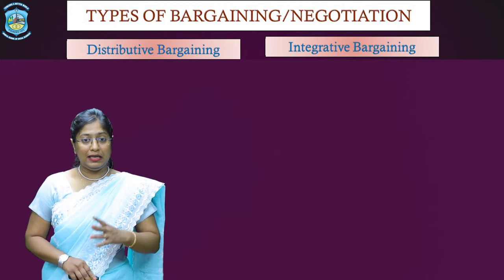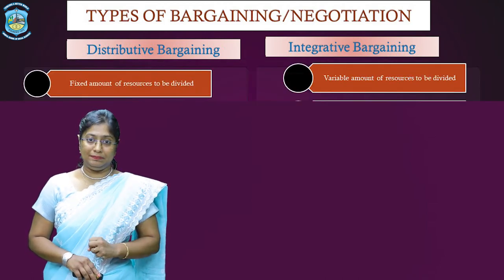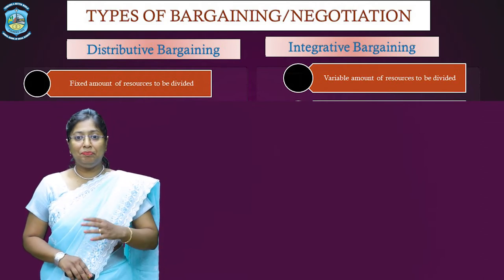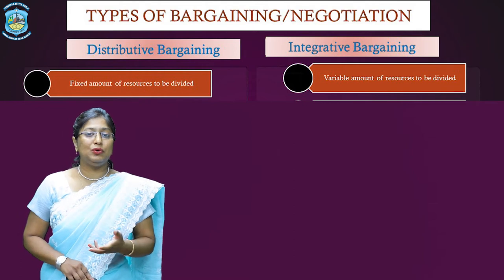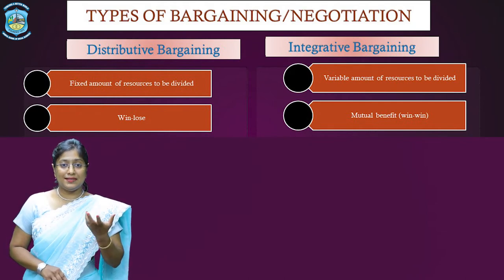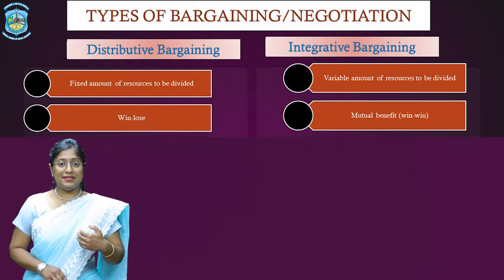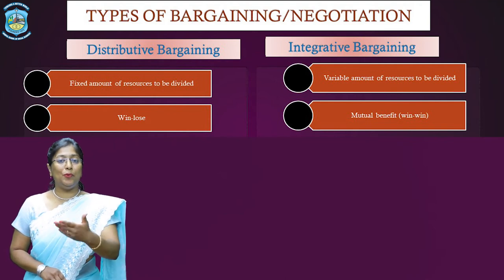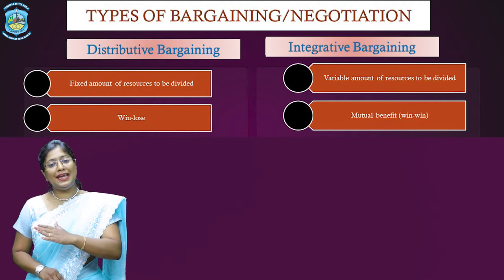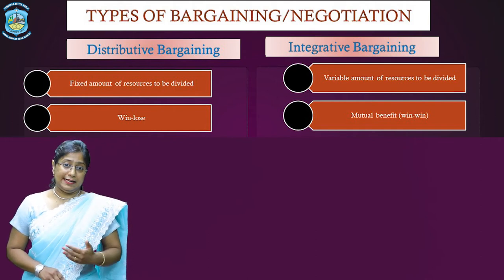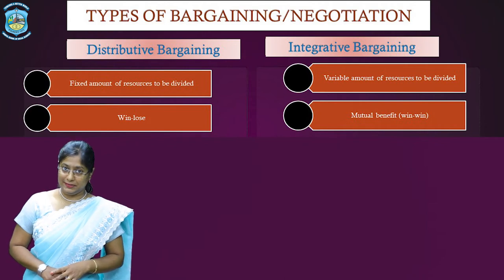What is distributive bargaining? Here, the amount of resources available to be divided will be fixed. Whereas under integrative bargaining, the amount of resources is going to be variable. Under distributive bargaining, a win-lose situation is always cropping up, because the negotiator tries to win the negotiation and makes the opponent lose. Whereas in case of integrative bargaining, there is going to be mutual benefit — that is, a win-win situation tends to arise.